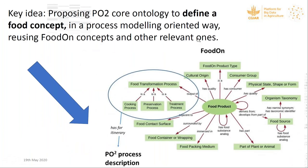The key idea of this presentation: we propose to use PO2 core ontology to define the food concept in a process-modeling-oriented way, reusing FoodOn concepts and others as needed. Taking back the graphical presentation from Damien's talk, I'll focus on the food transformation process part, surrounded here — everything I will present can be seen as an extension of that part of the food ontology.